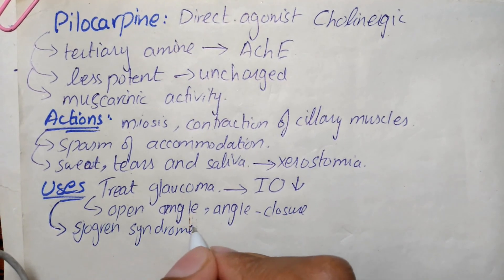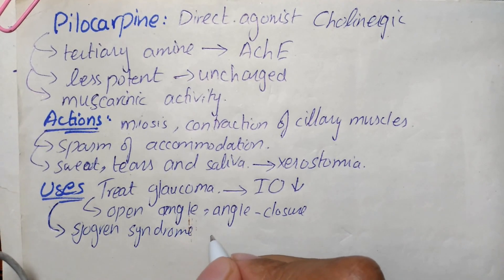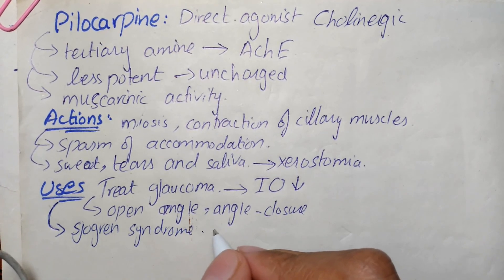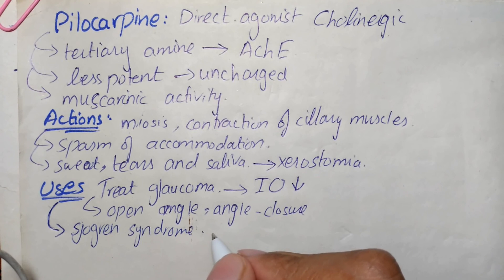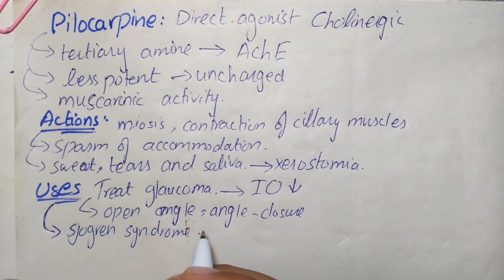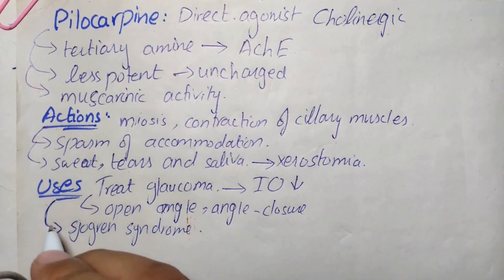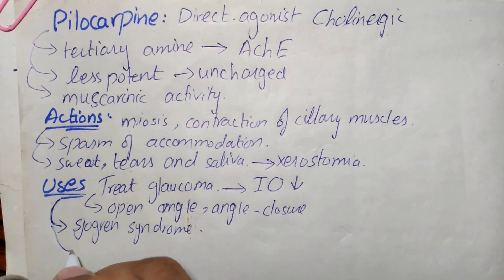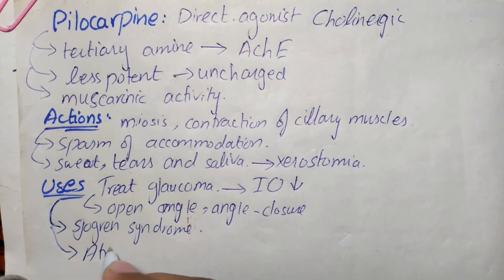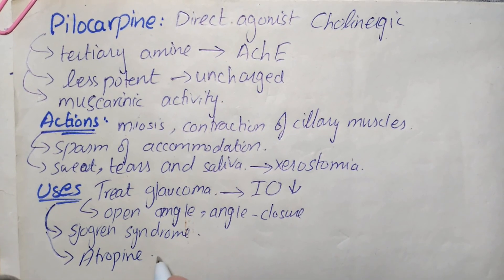It is also used in patients having Sjögren's syndrome. This syndrome is an autoimmune disorder characterized by dry mouth and lack of tears. In such patients, we can use pilocarpine to increase secretion in the mouth and tears. This miotic action of pilocarpine is also useful in reversing the mydriasis due to atropine, so for reversal of atropine-induced mydriasis, we can use pilocarpine as a miotic agent.